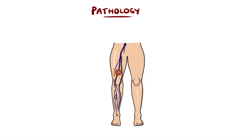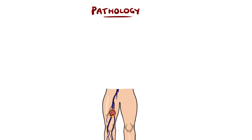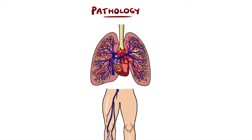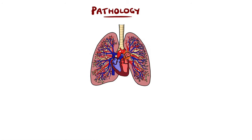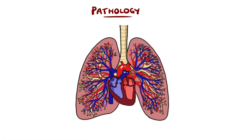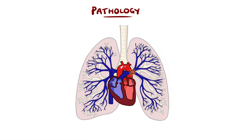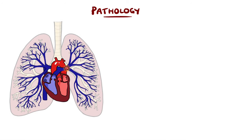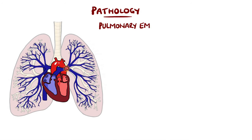Parts of this thrombus can break off and travel along the venous system, eventually reaching the right ventricle and being pumped into the pulmonary artery. This is known as a pulmonary embolism, which leads to two main problems.